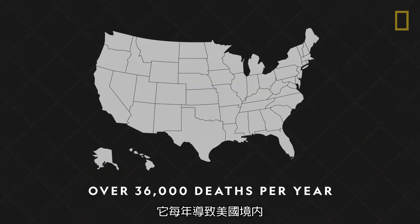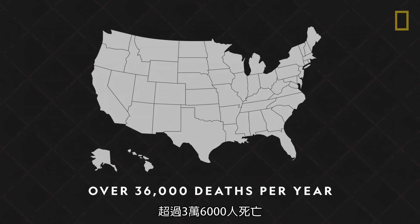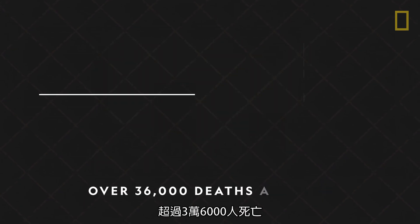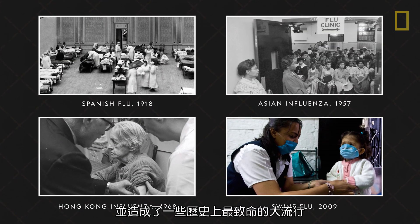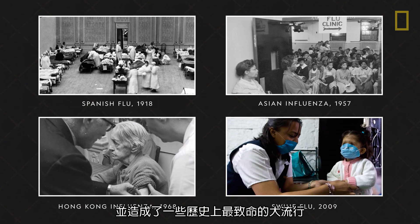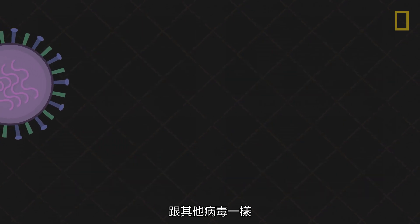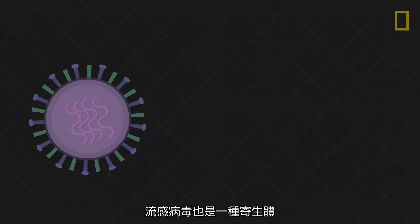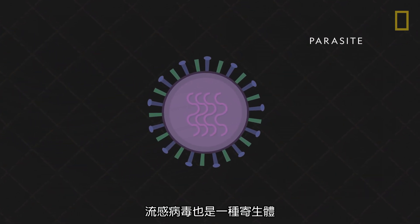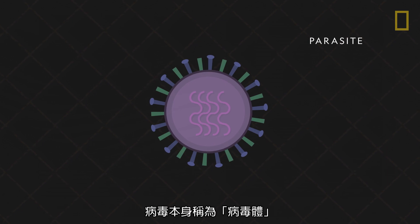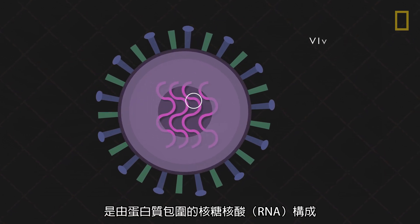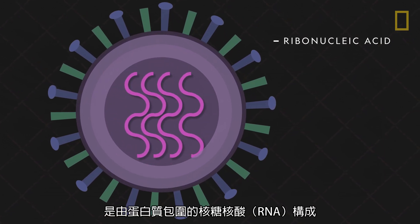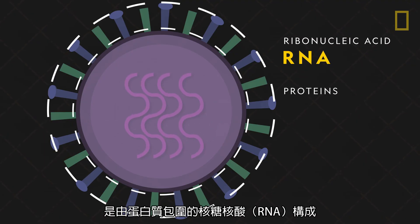It causes more than 36,000 deaths in the US each year and was responsible for some of history's deadliest pandemics. Like other viruses, the flu virus is a parasite. The viral agent itself, called a virion, is made of a ribonucleic acid, or RNA, surrounded by proteins.